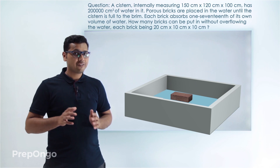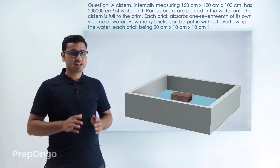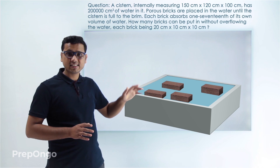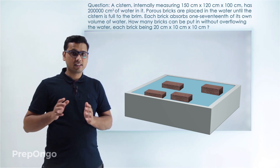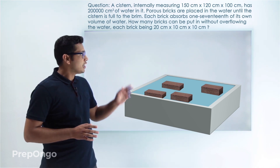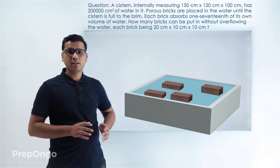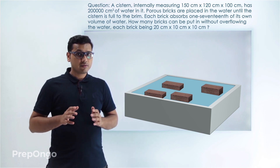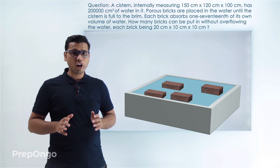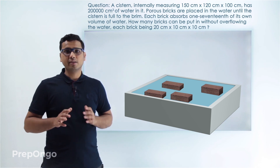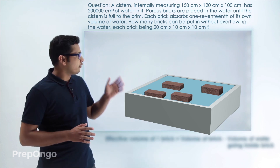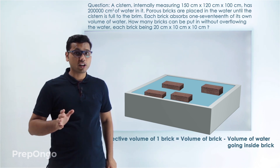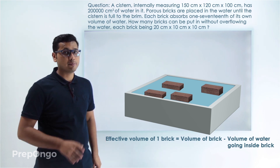Now we have to calculate how many bricks we can put inside this cistern if the dimension of the bricks is 20 × 10 × 10. We can find out the effective volume raised by the bricks — this will be the volume of the brick minus the volume of water which is going inside the brick.